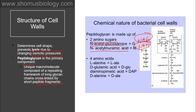The NAG and NAM structures are visible, and NAM also has four amino acids linked to it: L-alanine, D-glutamic acid, D-diaminopimelic acid, and D-alanine — in that sequence. Both NAG and NAM are connected by beta-1,4 linkage, forming the peptidoglycan complex structure of the cell wall, present in both gram positive and gram negative bacteria.